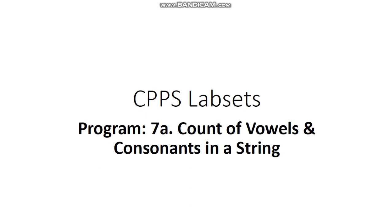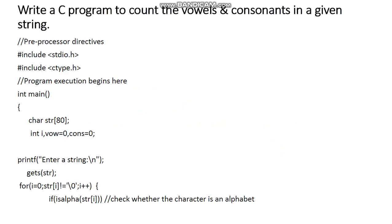And here I am presenting one more C programming example that is labset 7th A. The aim of the program is to count the number of vowels and consonants in a string. The question is simple, just a one-line question given in the lab syllabus. And that is, write a C program to count the vowels and consonants in a given string.